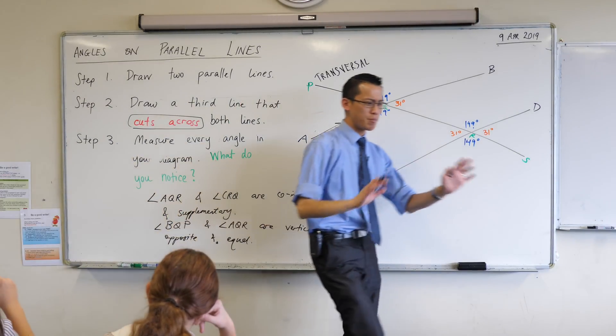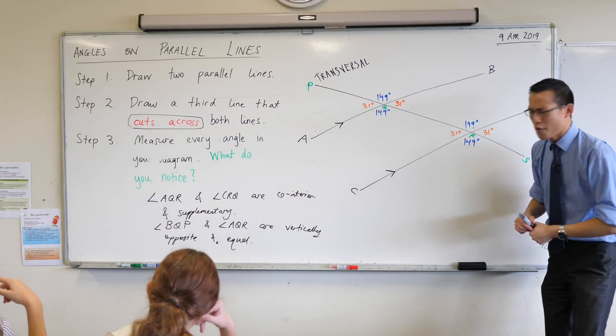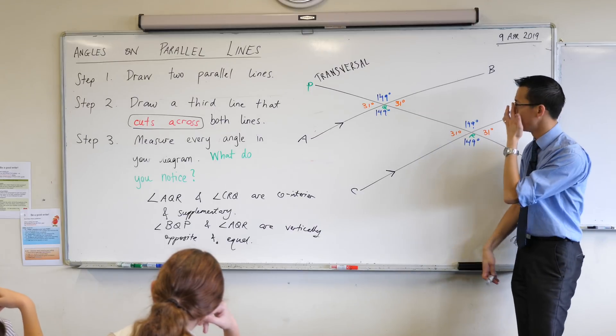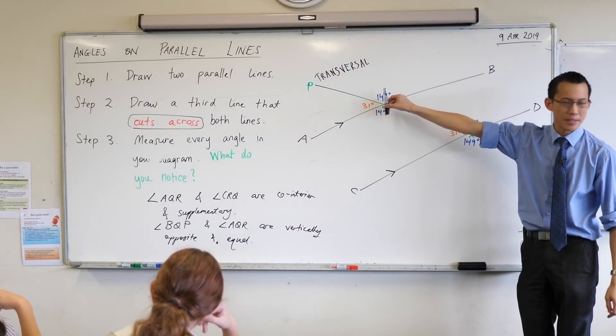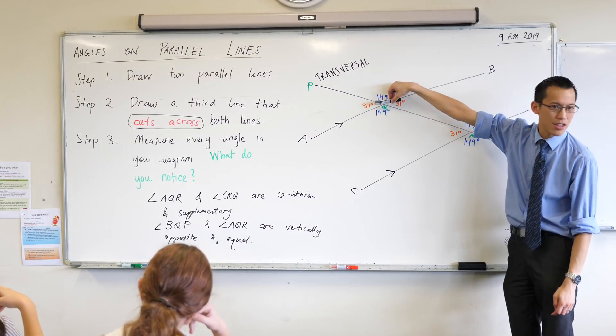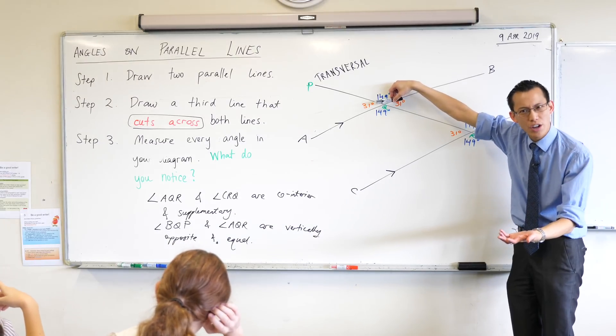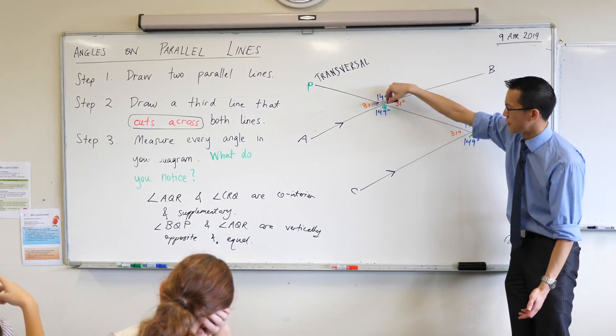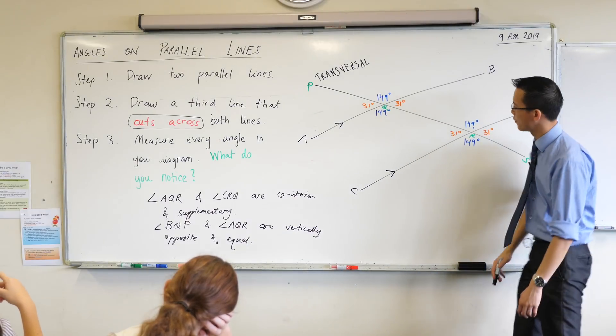By the way just after you finish writing that put your pens down, vertically opposite is a bit of a sneaky word because these guys look vertical right? But what about these guys? See the 31 and 31? They're also vertically opposite aren't they? It's just that vertical is a relative word right?